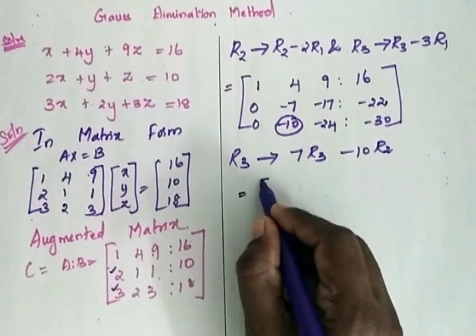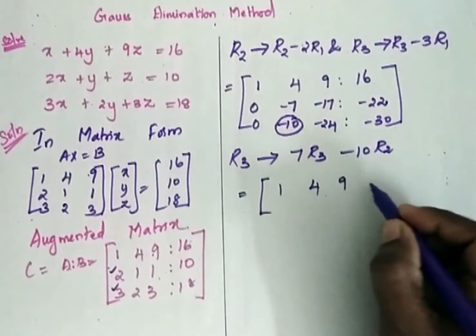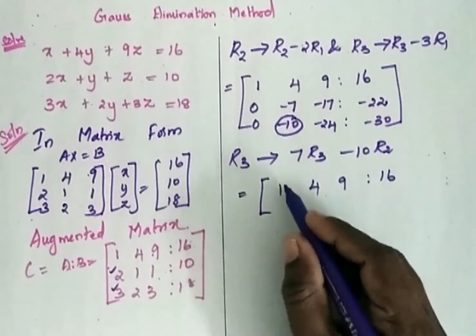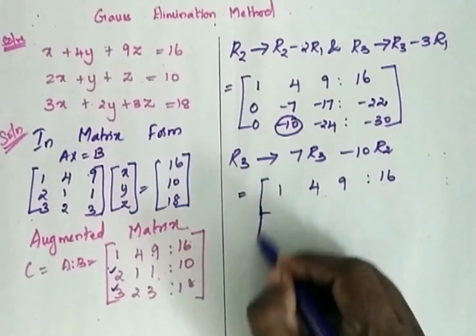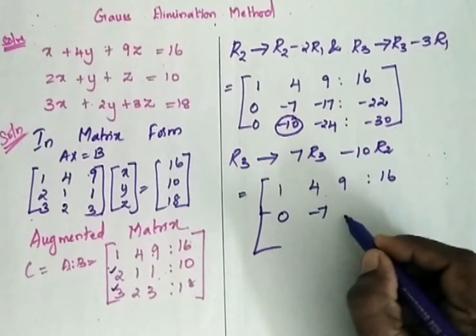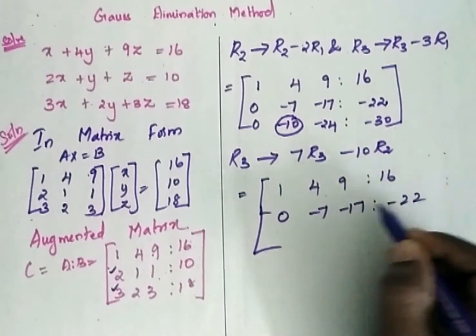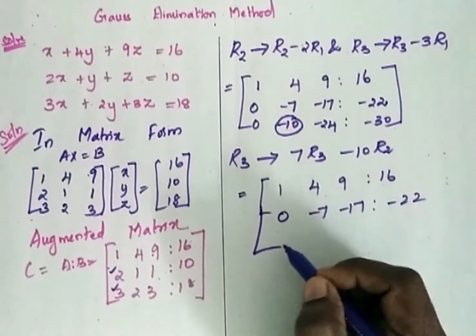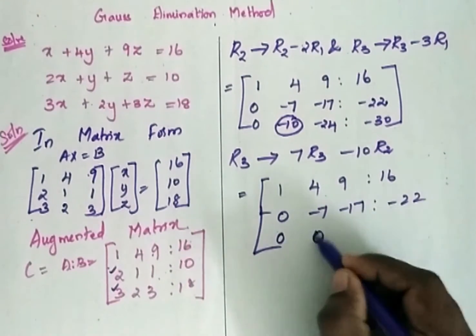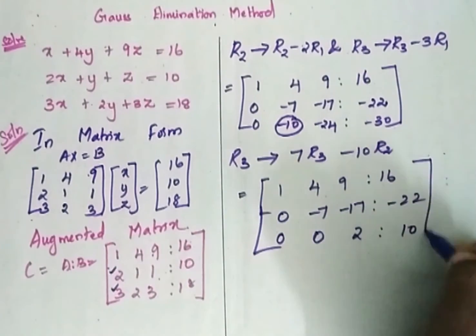After applying 7R3 minus 10R2, the resulting matrix is: first row 1, 4, 9, 16 — remains unchanged; second row 0, minus 7, minus 17, minus 22 — remains unchanged; and the third row becomes 0, 0, 2, 10. We have now obtained the required upper triangular format.